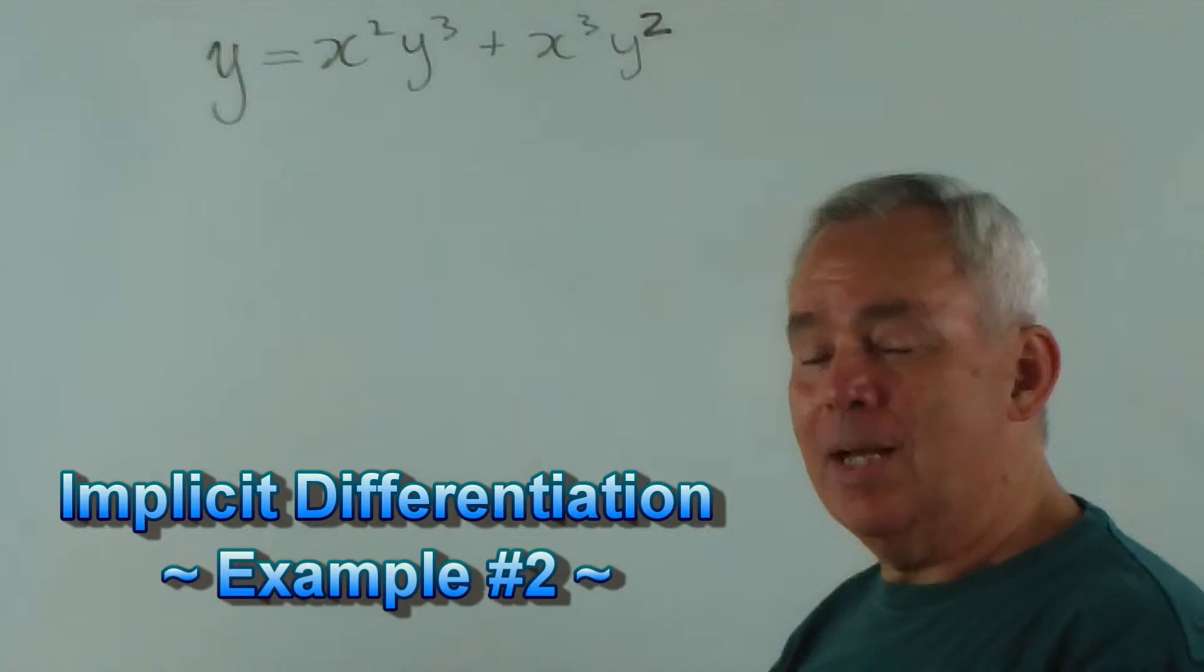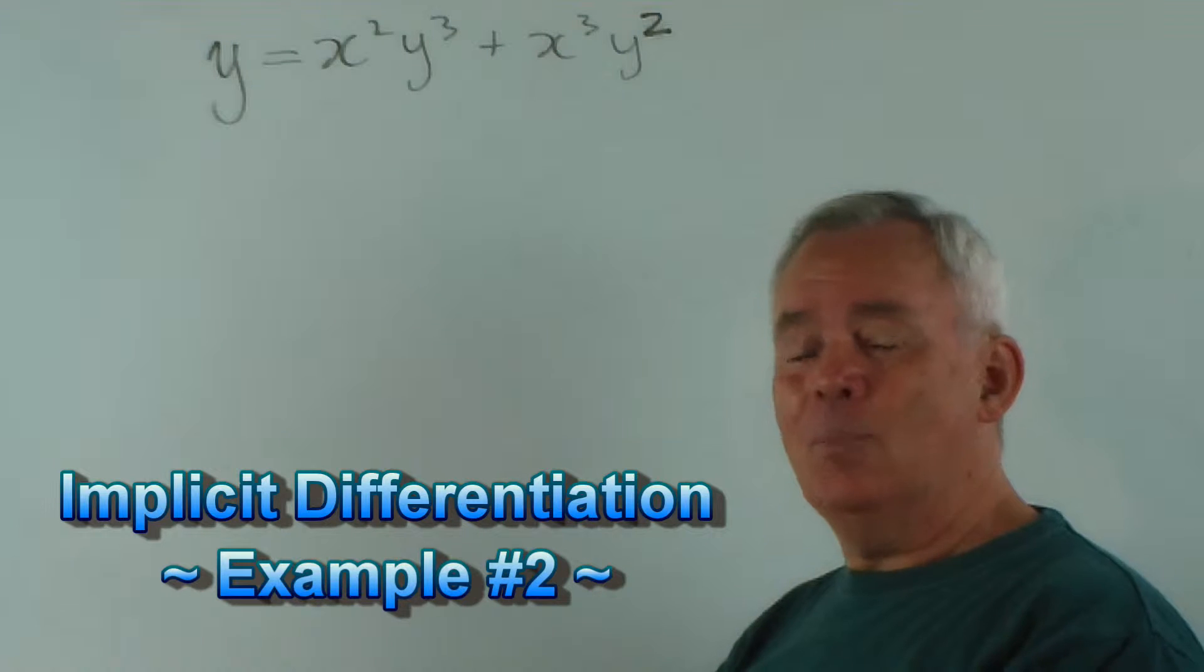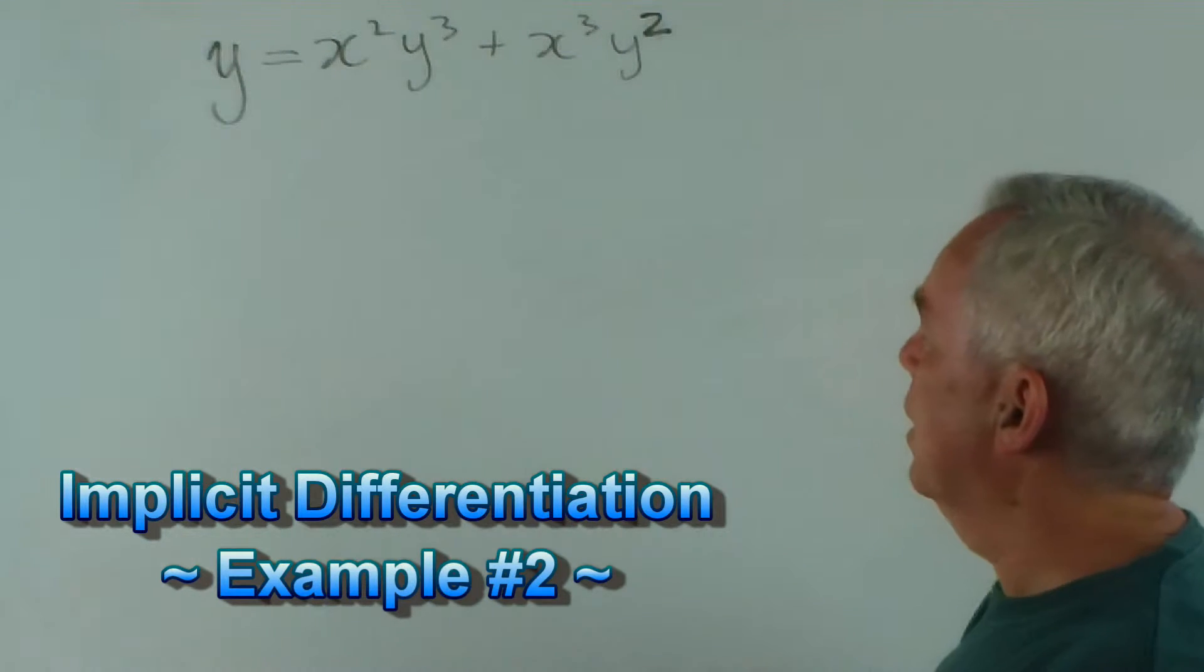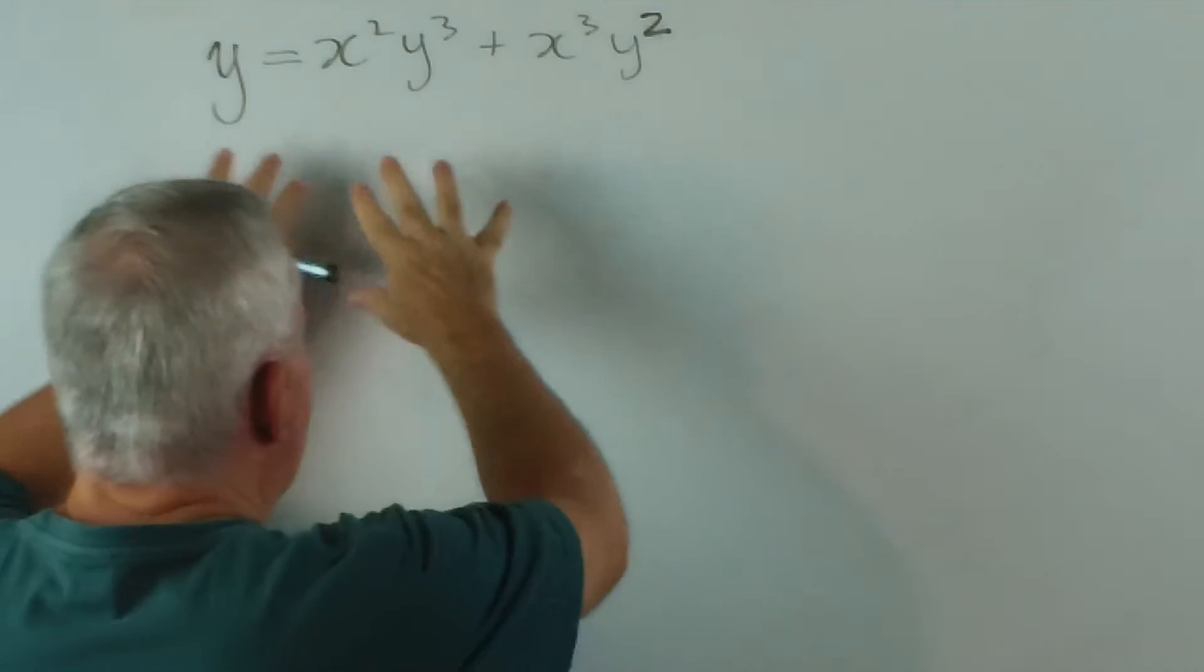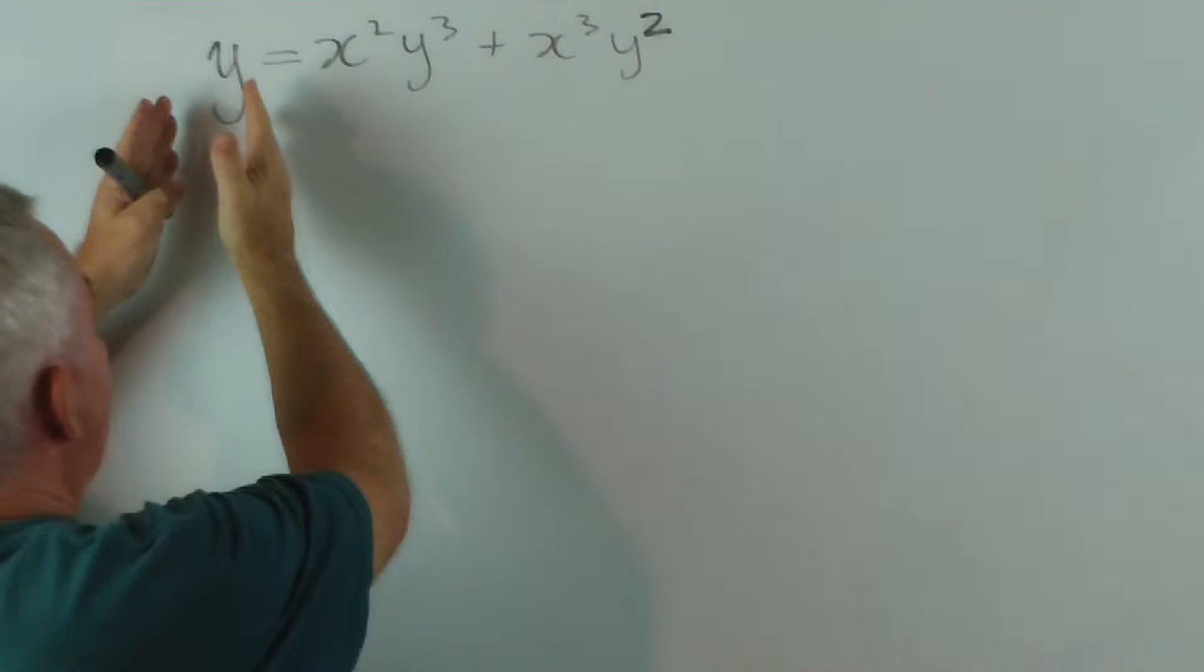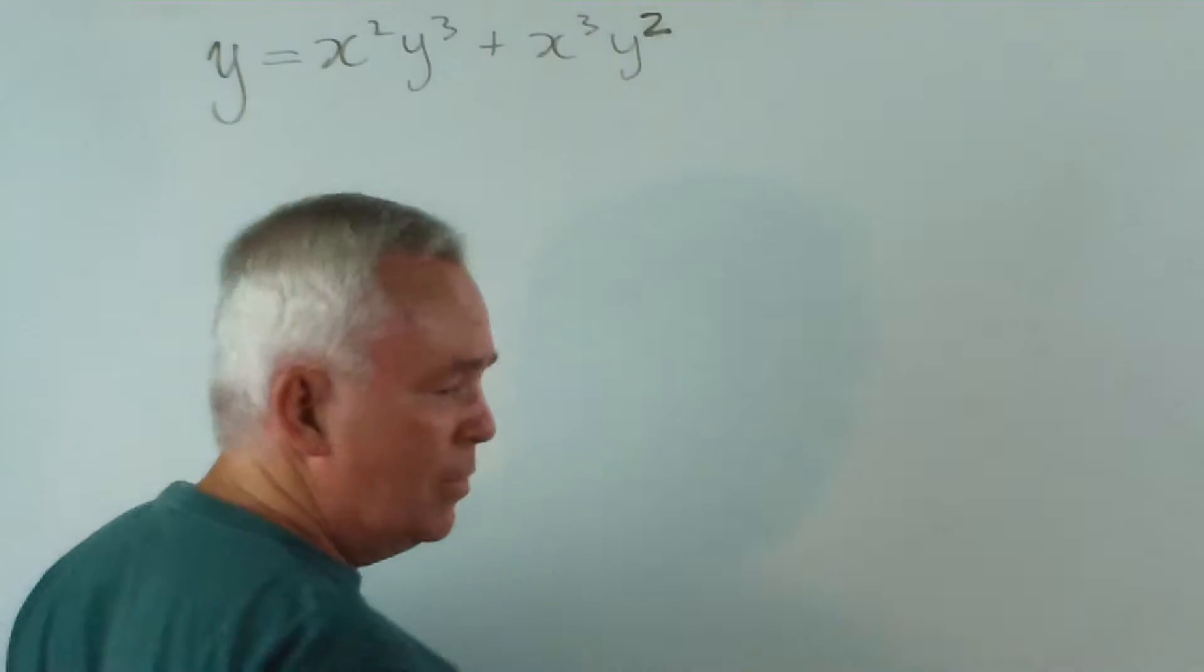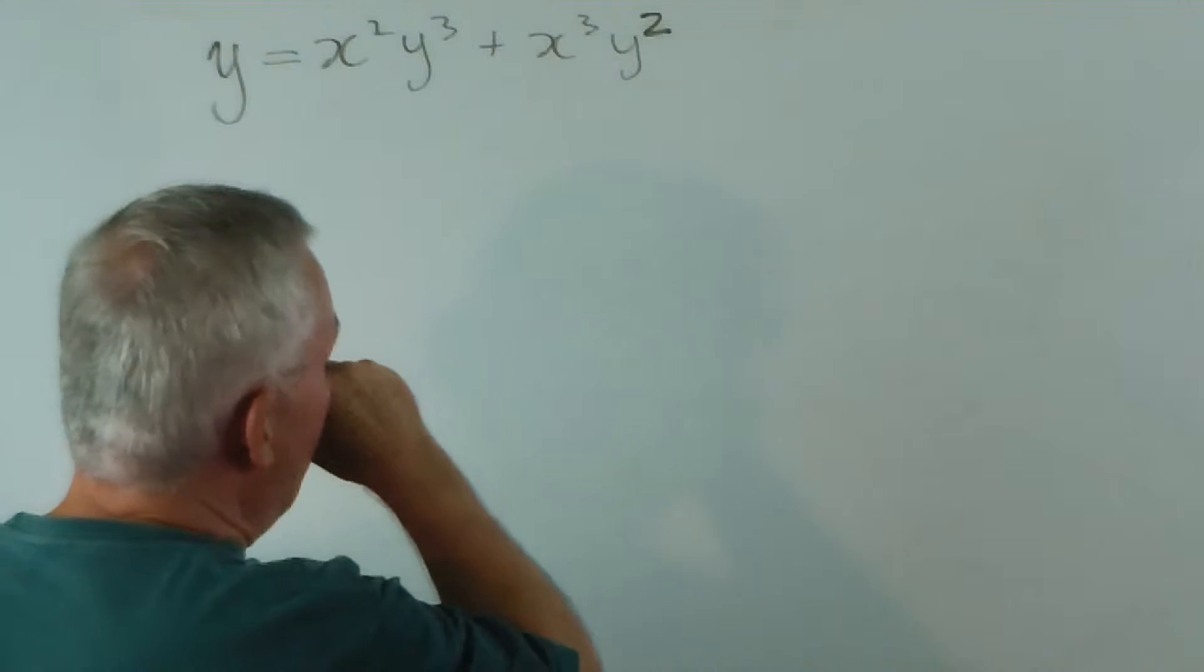Good day and welcome to another example of how to find the derivative of an implicit function using what's called implicit differentiation. Again, it's an implicit function because we don't have y expressed as a function purely of x terms. We have a mixture of x and y's in here.